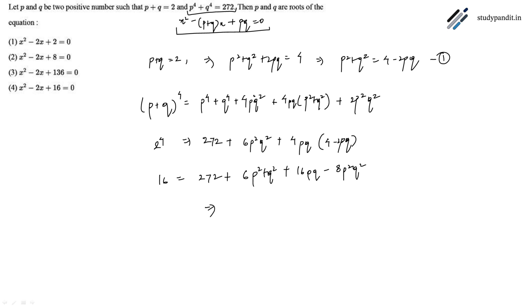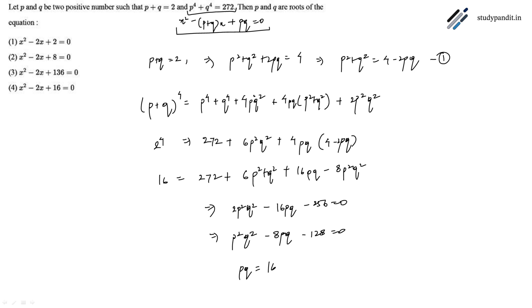We get 2p squared q squared minus 16pq minus 256 equals 0, which simplifies to p squared q squared minus 8pq minus 128 equals 0. Solving this equation, pq equals 16 or pq equals minus 8. Since p and q are both positive numbers, minus 8 is rejected.